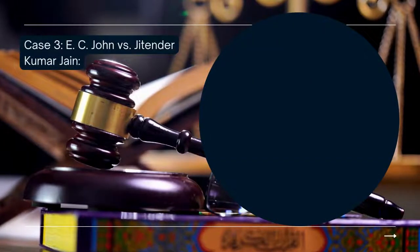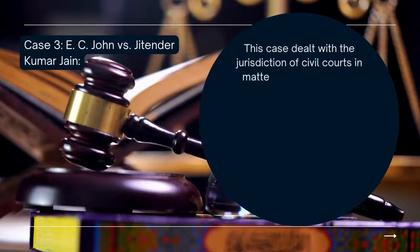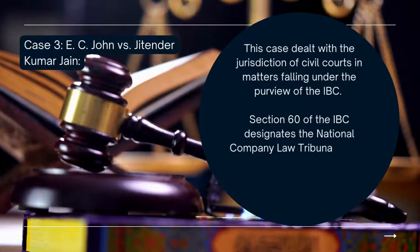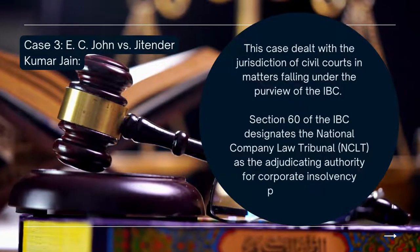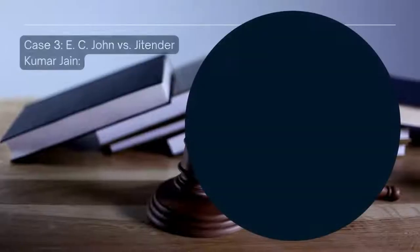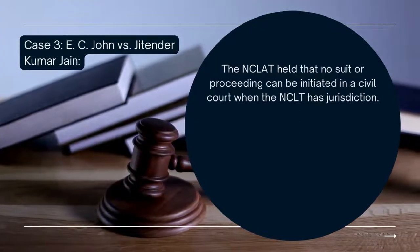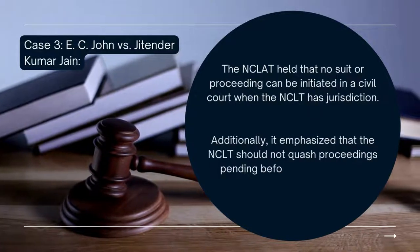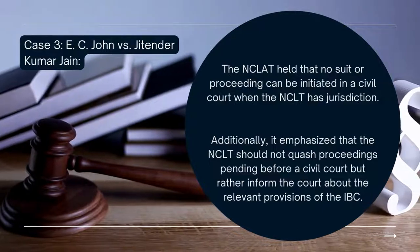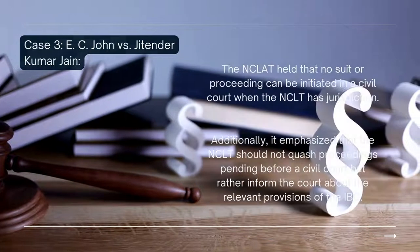Case 3: E.C. John vs. Jitendra Kumar Jain. The case dealt with the jurisdiction of civil courts in matters falling under the purview of the IBC. Section 60 of the IBC designates the National Company Law Tribunal as the adjudicating authority for corporate insolvency proceedings. The NCLAT held that no suit or proceeding can be initiated in a civil court when the NCLAT has jurisdiction. Additionally, it emphasized that the NCLAT should not quash proceedings pending before a civil court, but rather inform the court about the relevant provisions of the IBC.